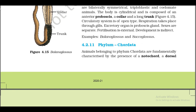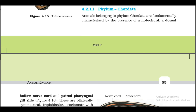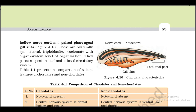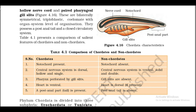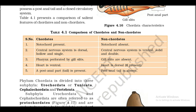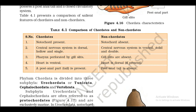4.2.11 Phylum Chordata. Animals belonging to phylum Chordata are fundamentally characterized by the presence of a notochord, a dorsal hollow nerve cord, and paired pharyngeal gill slits (Figure 4.16). These are bilaterally symmetrical, triploblastic, coelomate with organ system level of organization. They possess a post-anal tail and a closed circulatory system. Table 4.1 presents a comparison of salient features of chordates and non-chordates. Chordates: notochord present, central nervous system is dorsal, hollow, and single, pharynx perforated by gill slits, heart is ventral, post-anal tail present. Non-chordates: notochord absent, central nervous system is ventral, solid, and double, gill slits absent, heart is dorsal, post-anal tail absent.